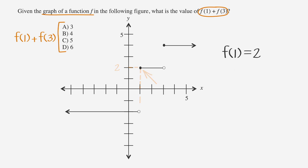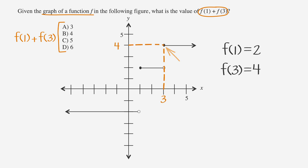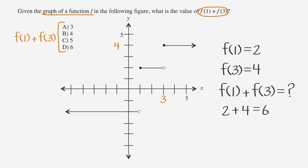Now let's find the value of y when x equals 3. Notice the unshaded and shaded circles at x equals 3. Again, we'll ignore the unshaded circle and only look at the shaded circle. When x equals 3, y equals 4, so f(3) = 4. Adding these values together, f(1) + f(3) becomes 2 + 4, which equals 6.